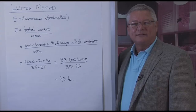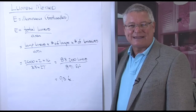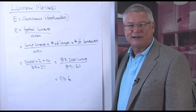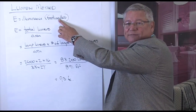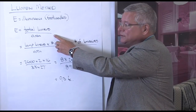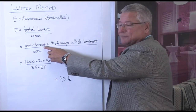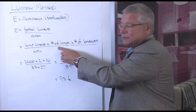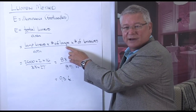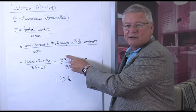Let's calculate how much we would expect to have. The Lumen method of calculation allows us to calculate the average illuminance over a given area. Illuminance is measured in foot candles, and the definition of a foot candle is the total lumens divided by the area of the space. We find the total lumens by taking the lamp lumens, multiplying by the number of lamps per luminaire, times the number of luminaires in the space, and dividing by the entire area.